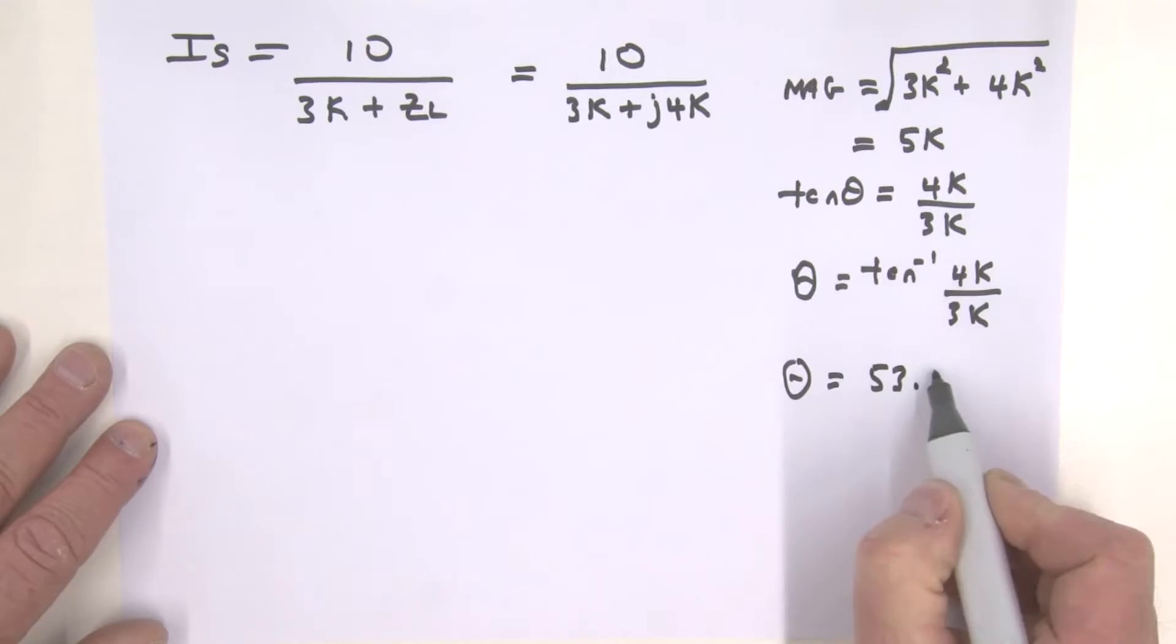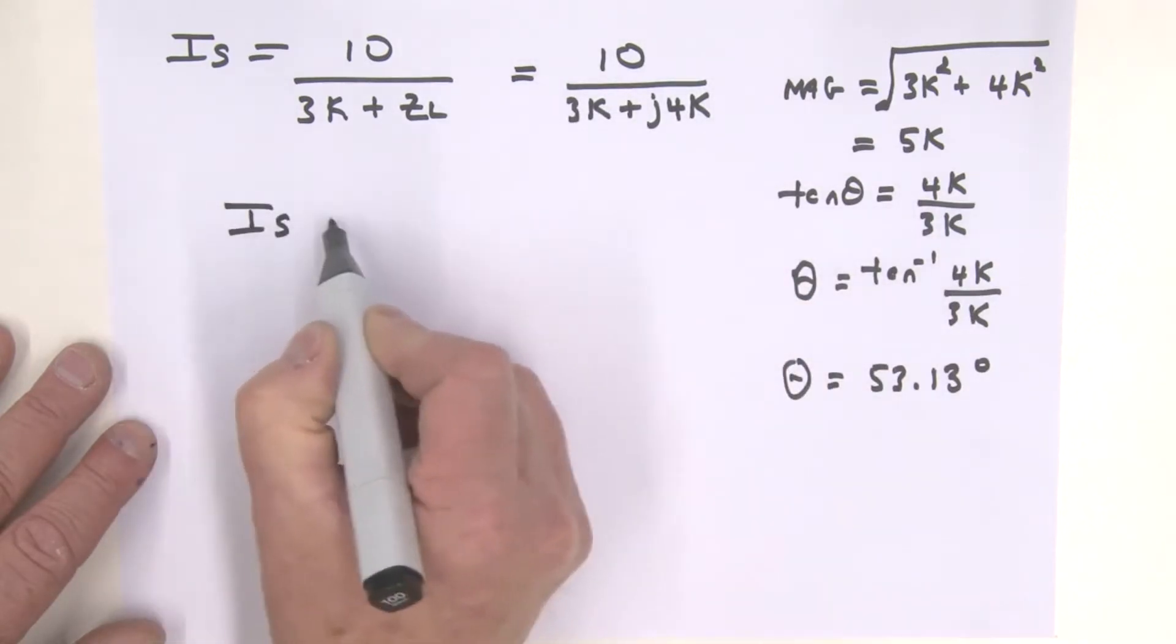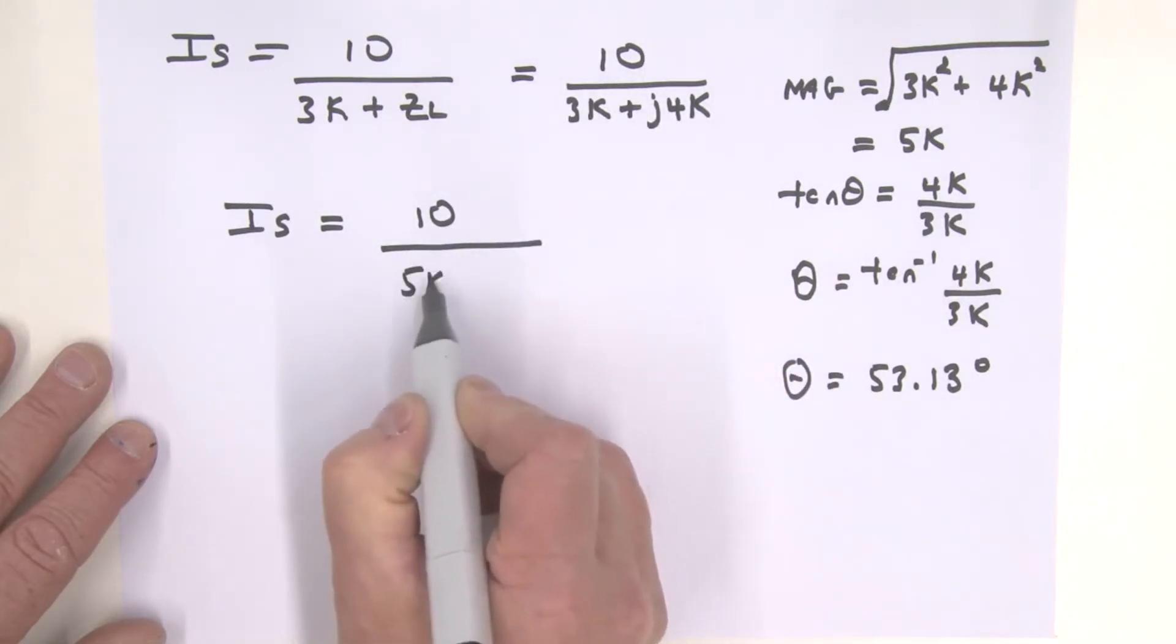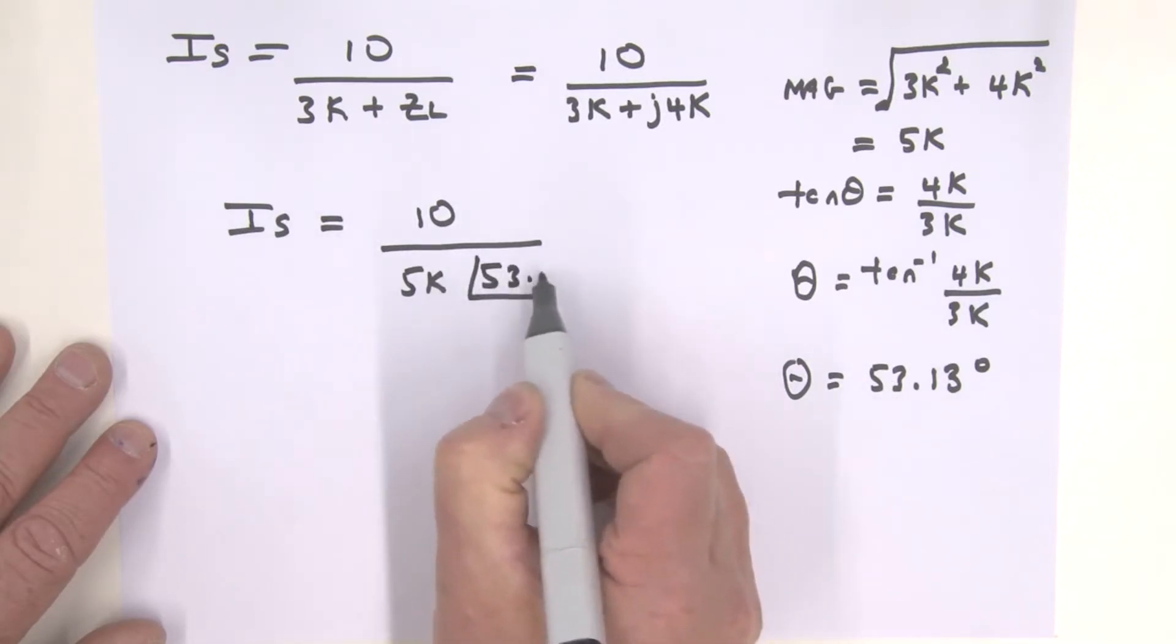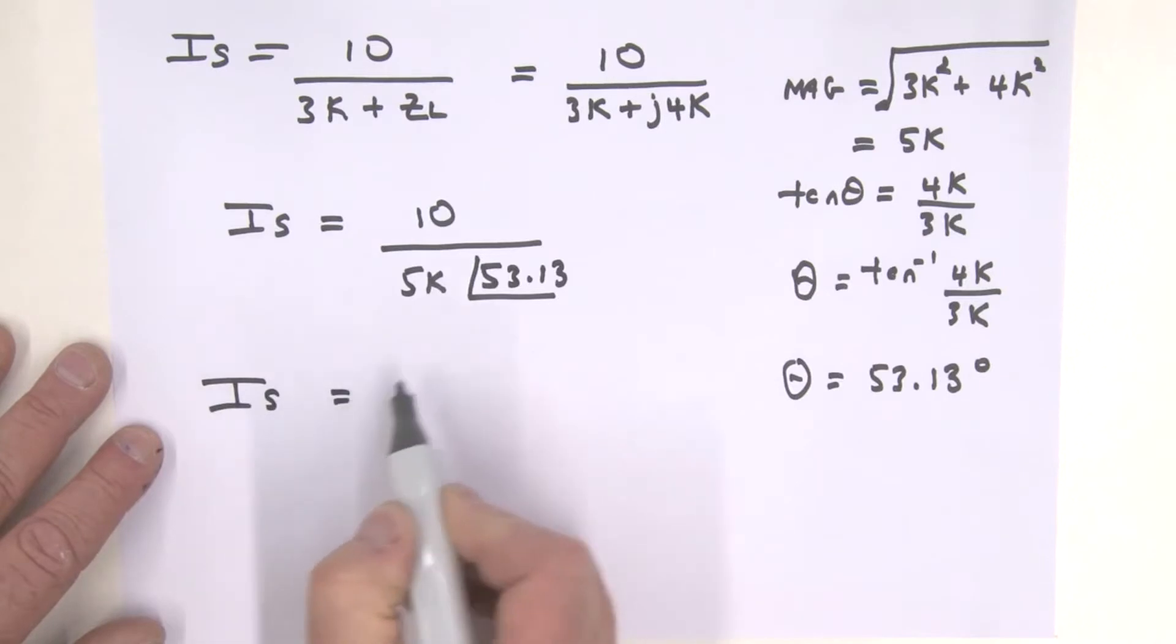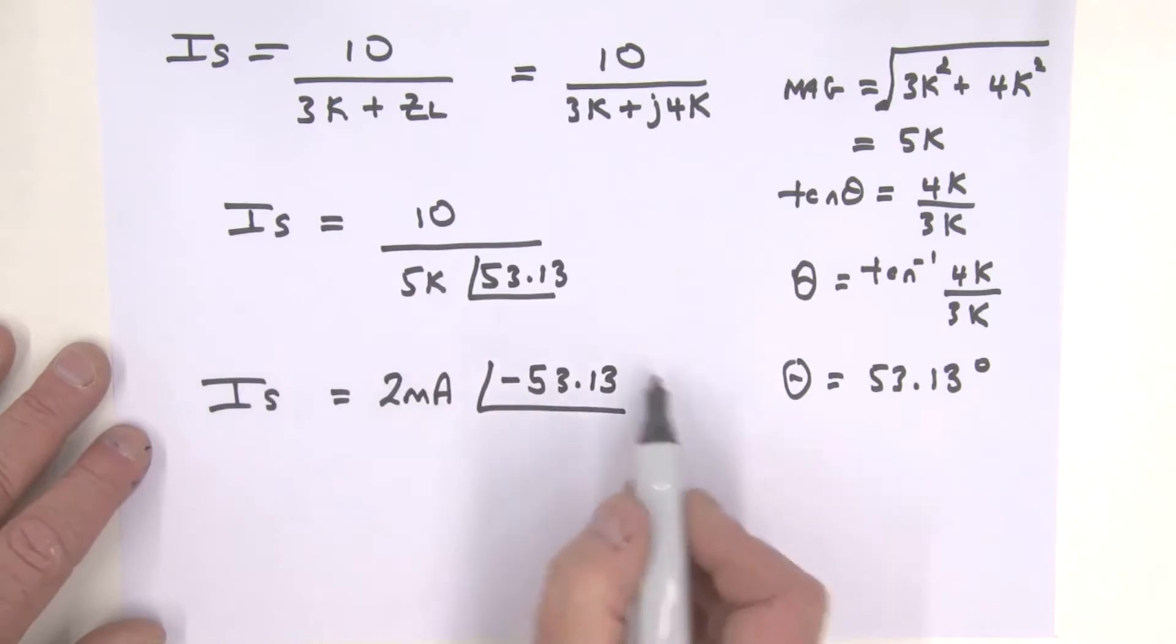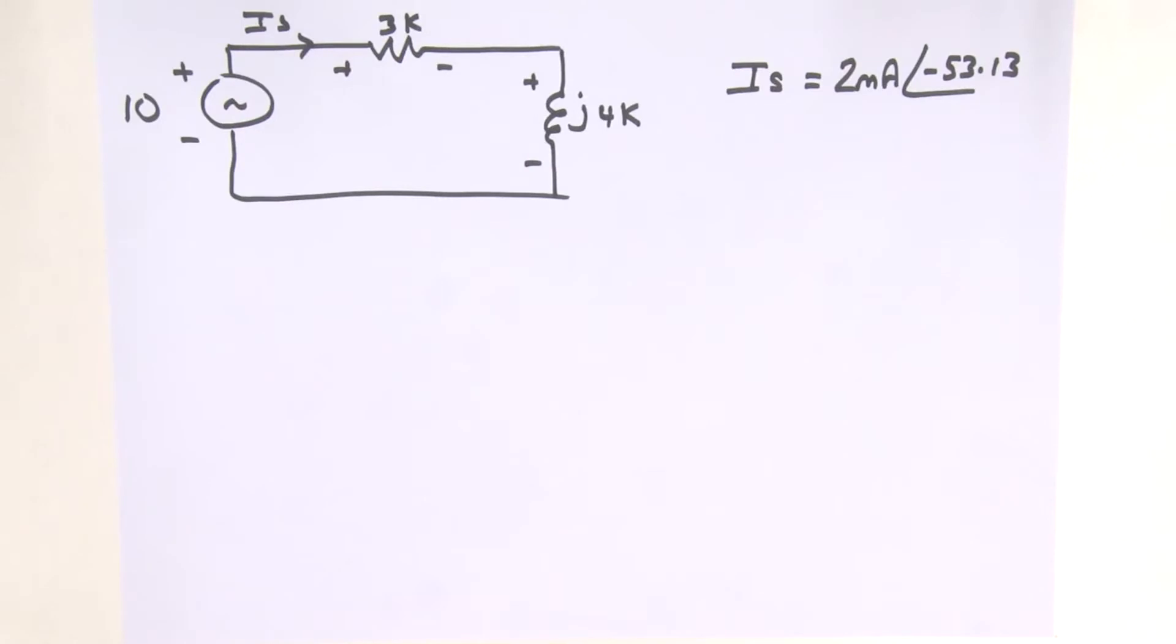Let's put that information in here. So we've got IS is then equal to 10, and that is divided by, in polar form, 5K at an angle of 53.13 degrees. So therefore, let's perform that division. IS then is equal to 10 divided by 5K, which is 2 milliamps, and then bring this angle up to the top, this is a minus 53.13 degrees. And if you remember from the first part of our discussion in the previous video, that's exactly the current that we had before.